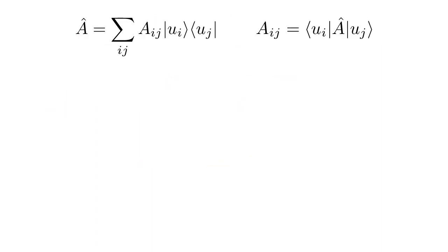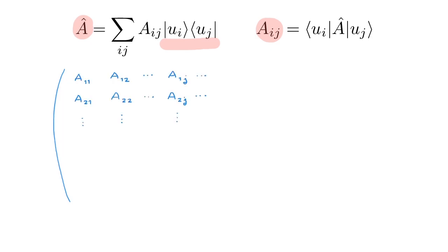After kets and bras, the next quantity we need are operators. An operator A can be written in the u basis as the sum over the outer products of the basis states, and the expansion coefficients Aij are given by the matrix elements of A with respect to the basis states. The very name 'matrix element' for this quantity comes from the matrix formulation of quantum mechanics. The expansion coefficients for an operator are labeled by two indices, so we arrange them in the form of a square matrix with the first index denoting the row and the second index the column. Therefore in the matrix formulation of quantum mechanics, operators are written as matrices.